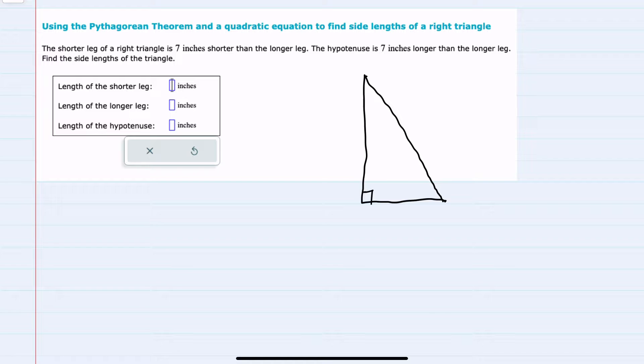Since the short leg is seven inches shorter than the long leg and the hypotenuse is seven inches longer than the long leg, I'm going to call the long leg x. The short leg is then seven inches shorter so it would be x minus seven and the hypotenuse is seven inches longer than the long leg so it would be x plus seven.